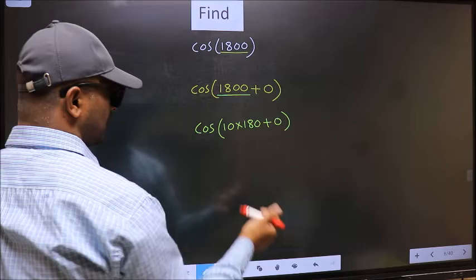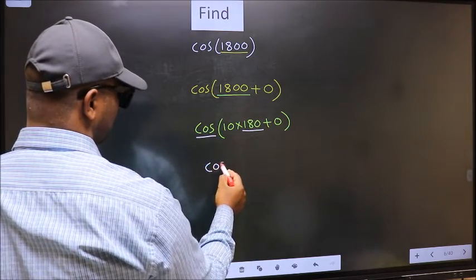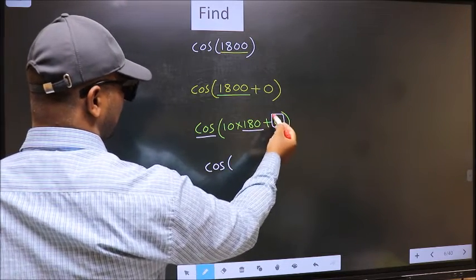Next, here we have 180. So cos is not going to change. It will remain cos. And inside, we get this angle 0.